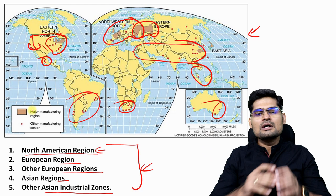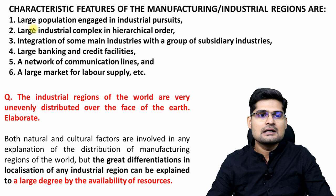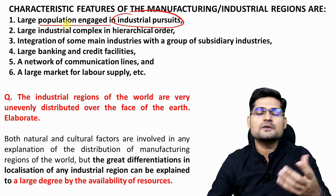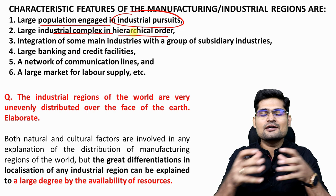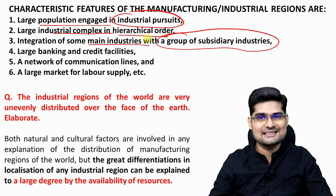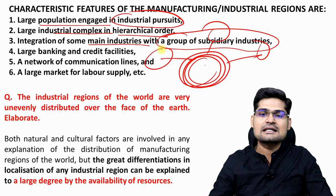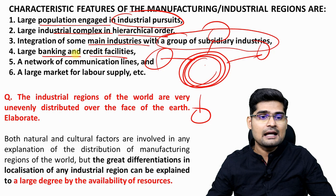The characteristic features that make these regions unique include: a large population engaged in industrial pursuits; large industrial complexes in hierarchy; integration of main industries with subsidiary industries creating a multiplier effect — a kind of agglomeration; large banking and credit facilities; and a network of communication lines with a large market and labor supply. Raw materials and labor — the factors of production — are very important.